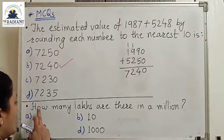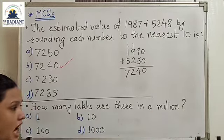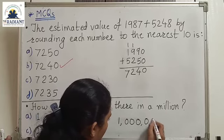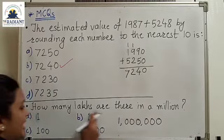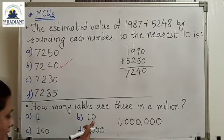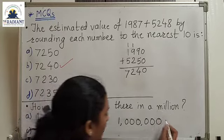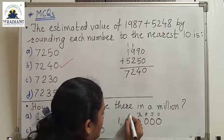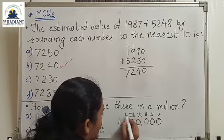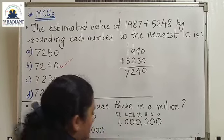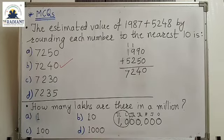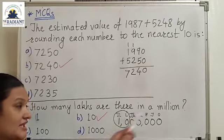Now the next MCQ: how many lakhs are there in a million? The options are 1, 10, 100, or 1000. Let's see how we write a million. Going through the place values: ones, tens, hundreds, thousands, ten-thousands — this is one lakh — and this is 10 lakhs. So our answer is B: 10 lakhs in a million.